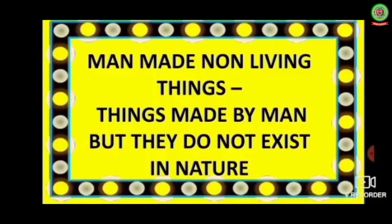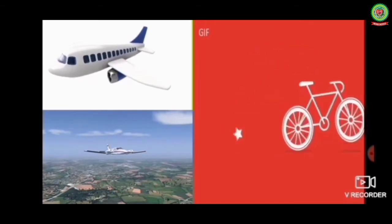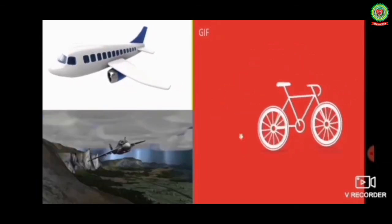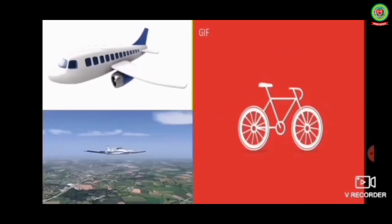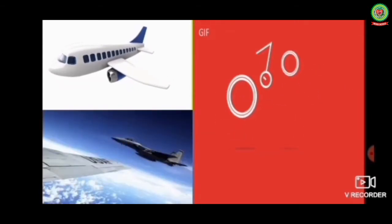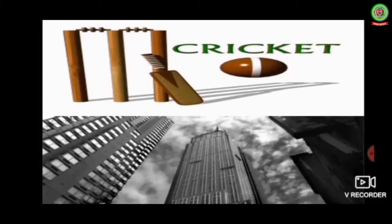For example, an aeroplane is a man-made thing — it is made by man and used to travel from one place to another. In the same way, a cycle is also a man-made thing. Children ride cycles and it is also used to go from one place to another. These are man-made things.